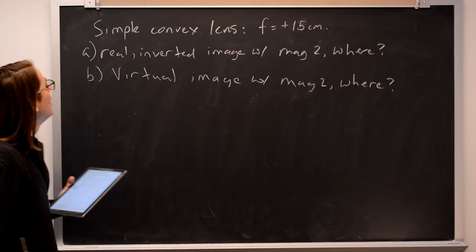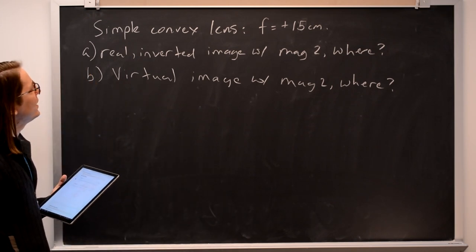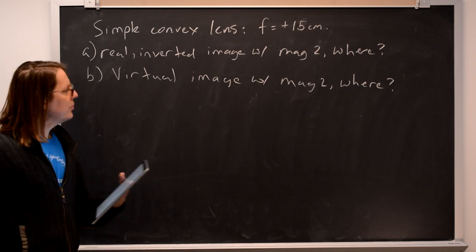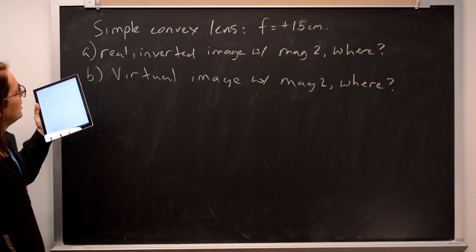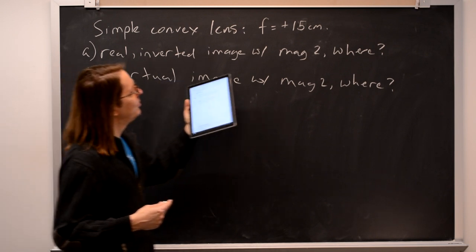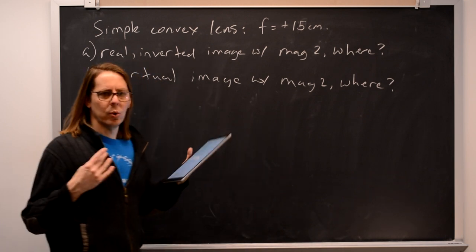Here's a quick thin lens question. You have a simple convex lens with a focal length of 15 centimeters. You have a candle you're going to put near the lens and you want to make a real inverted image with magnification 2. Where are you going to put it?